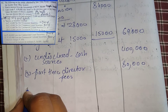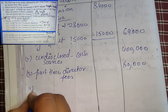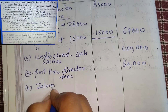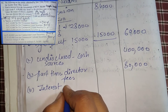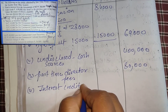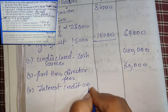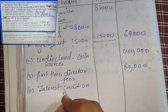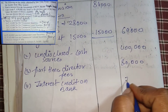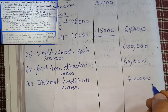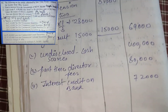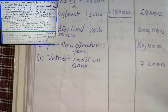Next, fourth point: interest credited in the bank account — we will write it directly. If interest is credited, we mention it. Here it is credited, so we write 72,000 directly. The charges will not come because it is a fixed deposit.